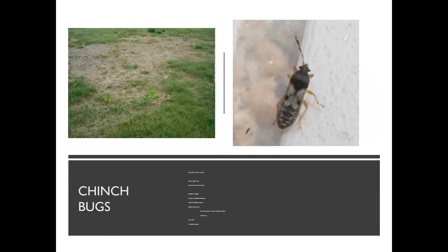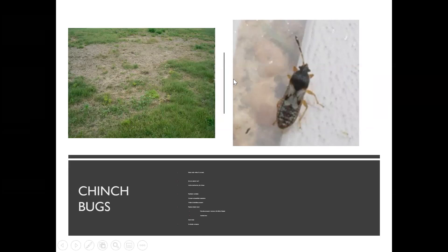Chinch bugs are small insects — maybe about a sixteenth of an inch — black and white in color, with the immatures being more of a pinkish peachy color. They feed on turf blades in both immature and adult stages and cause brown patchy turf — you have dead grass, a halo of yellow grass around it, and then grass they haven't gotten to yet that's perfectly fine. When I look for chinch bugs, I look in the grass and start digging around with my hands looking for them walking around.